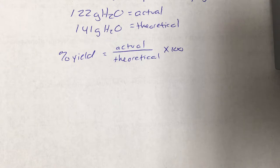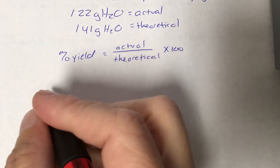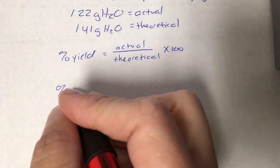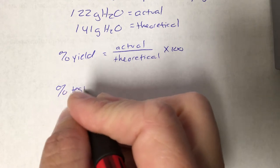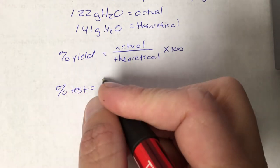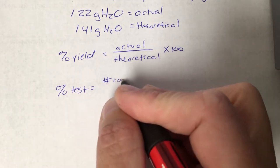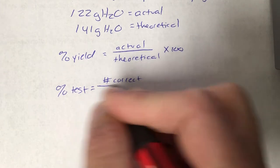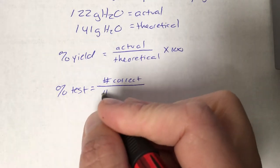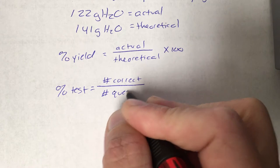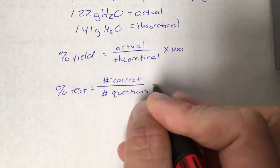It's the same way you calculate any percent. A percent is a part divided by the whole times 100. So if you wanted to figure out your percent on a test, your part would be the number you got correct, the whole would be the number of questions, times 100.